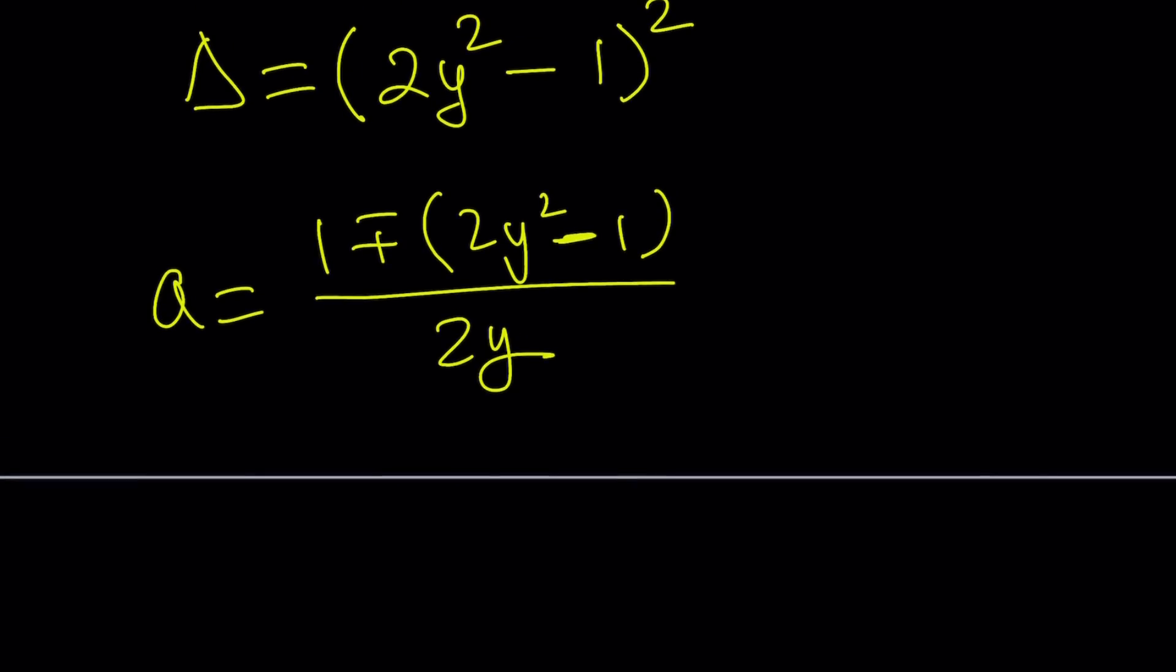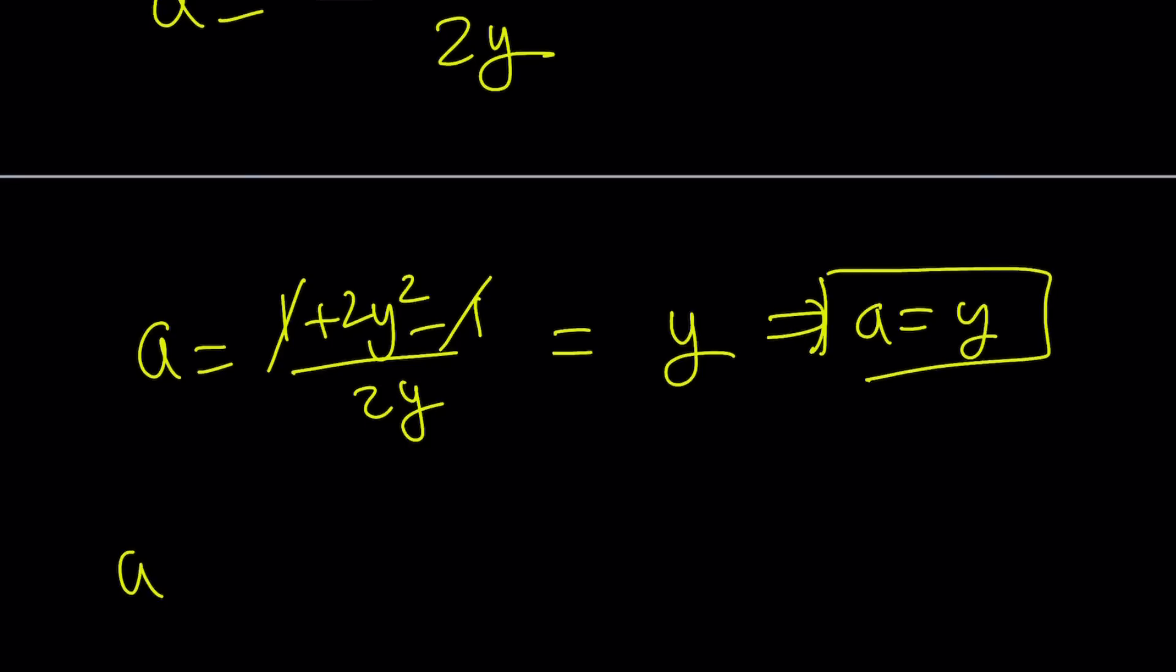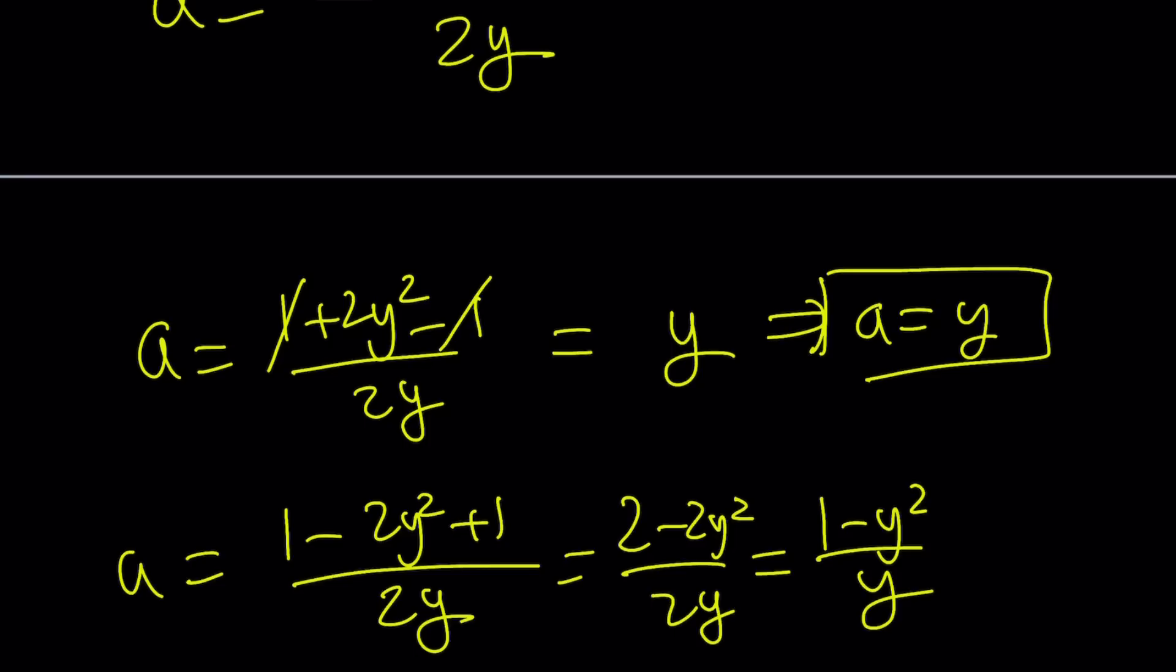So from here we get two solutions. Let's go ahead and write them. A equals 1 plus 2Y squared minus 1 over 2Y. That simplifies a great deal. A equals Y. That is beautiful. Don't you think? Please let me know. And the second solution is going to be 1 minus 2Y squared plus 1. You have to negate the one inside the parentheses. Be careful. This is 2 minus 2Y squared over 2Y. Dividing by 2 gives us 1 minus Y squared over Y. Not too bad. This is equal to A. So we've got two solutions for A.